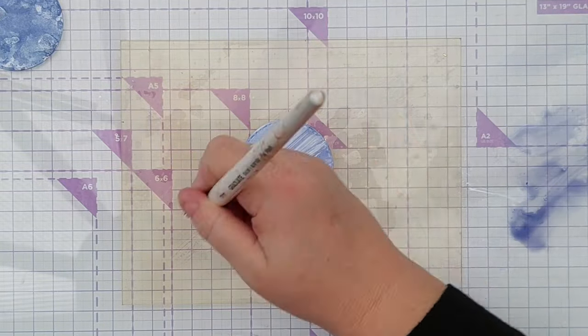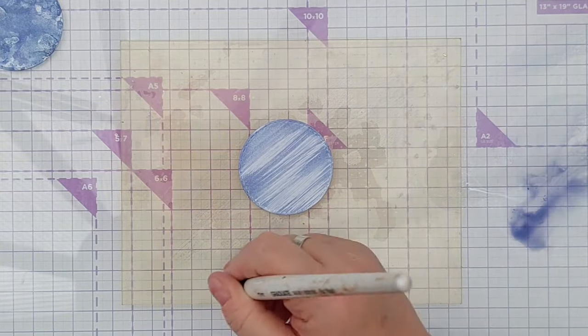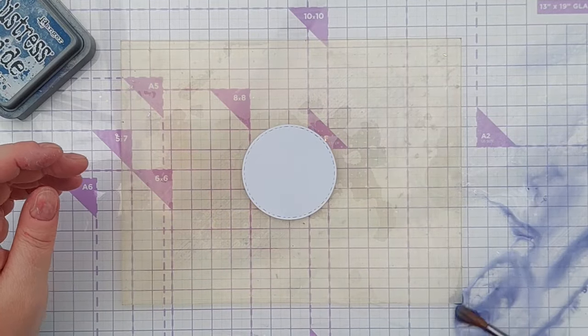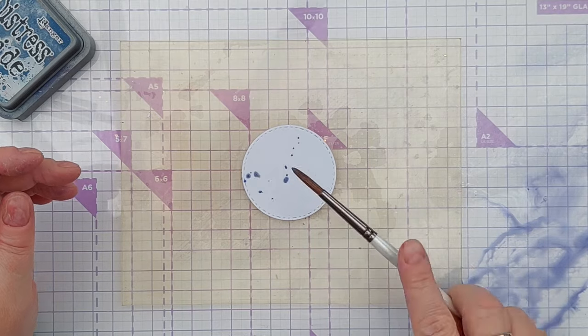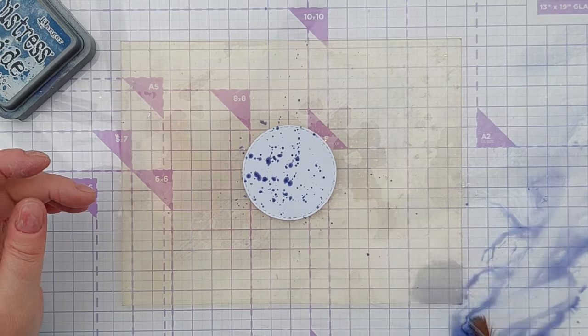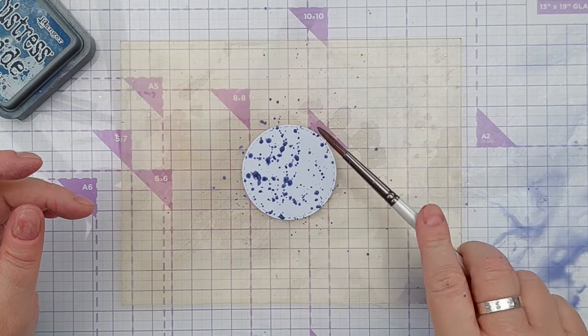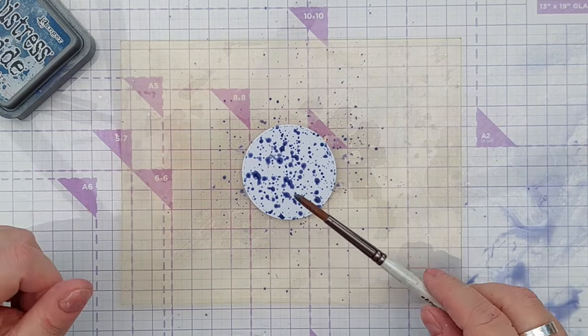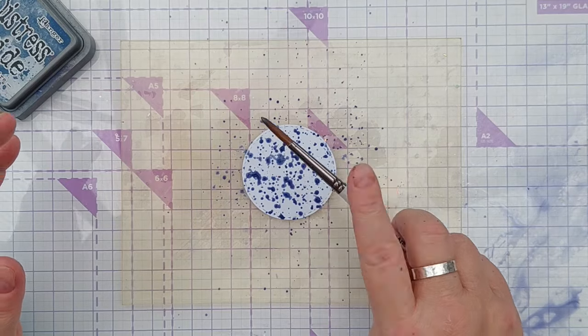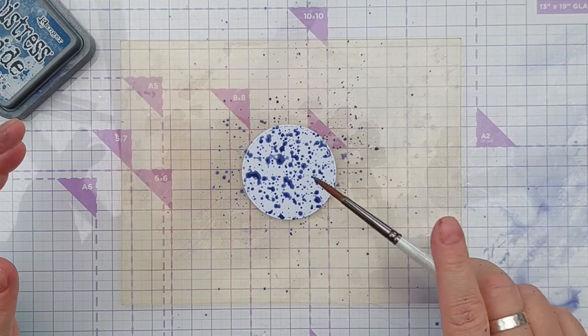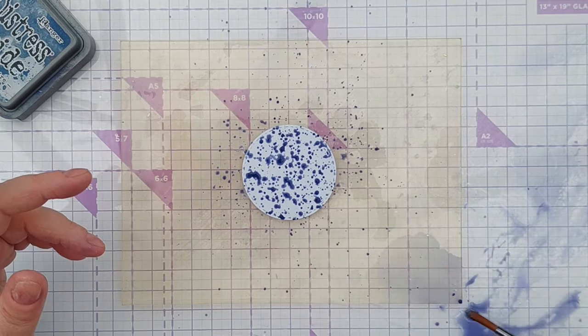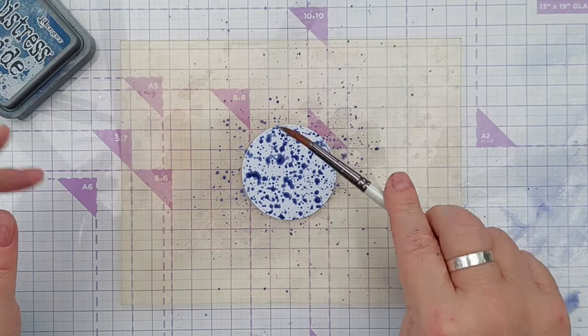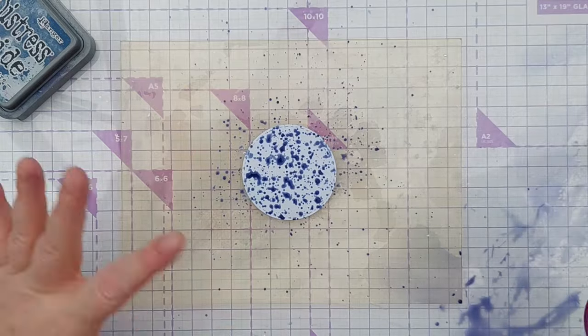This time I'm just going to splatter like crazy over this again with the shimmery chipped sapphire. When splattering, if you use a big paint brush with lots of water you're going to get big splats. If you use a smaller paint brush with less water or ink or whatever then you'll get smaller splats. So I'm going to dry that and then do another layer.